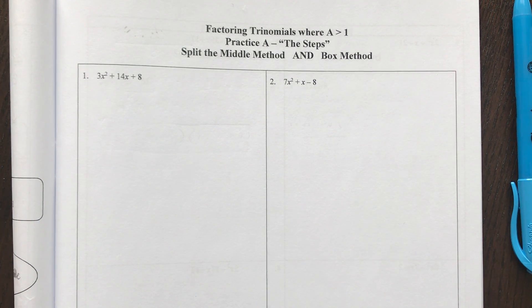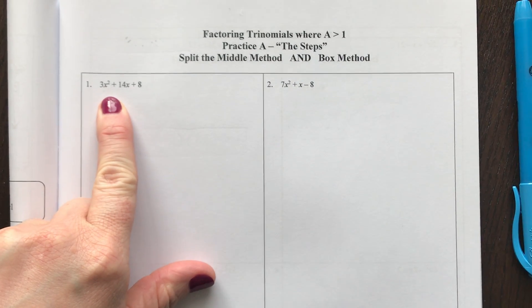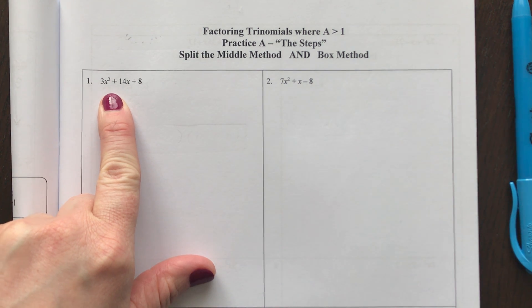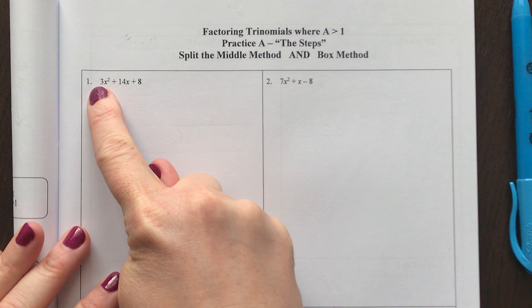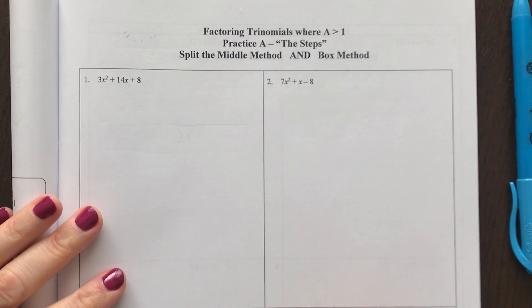In this video I'm going to show you four example problems for how to factor a trinomial where your front term has a number that you cannot factor out. Notice how 14 is not divisible by 3 and 8 is not divisible by 3. I want to show you how to factor without having to guess and check.